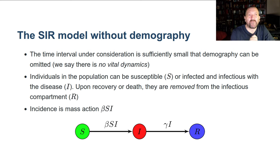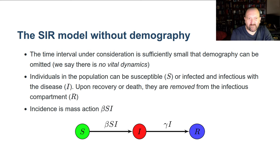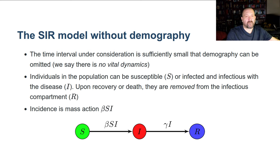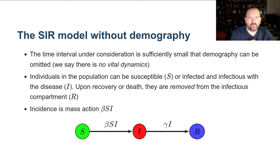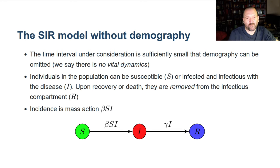Incidence is the number of new cases per unit time. The flow diagram shows how a typical individual progresses through disease stages: susceptible to infectious and infected, then into the recovered or removed compartment. The rate of movement from S to I is β·S·I — mass action incidence — while the rate of movement from I to R is γ·I.